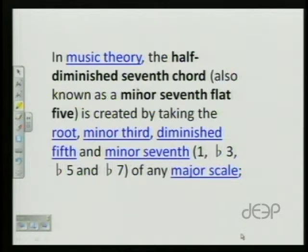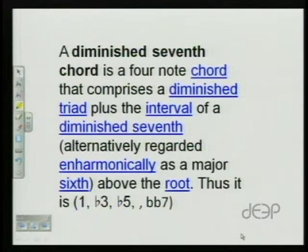I'm going to show you that in just one minute, but let's go on to the definition of simply a diminished seventh chord, and that chord is a four note chord that comprises a diminished triad, the same first three notes that we talked about with the half diminished, plus the interval of a diminished seventh rather than a minor seventh. So what the distinction between these two is really the seventh step of the chord, alternatively regarded harmonically as a major sixth, that seventh step above the root. Thus, it is the one, the flat three, the flat five, and a double flat seven.